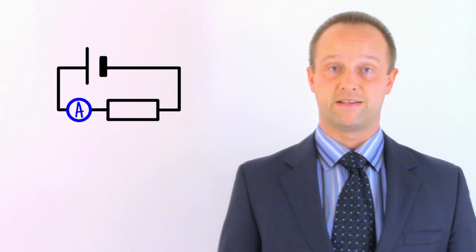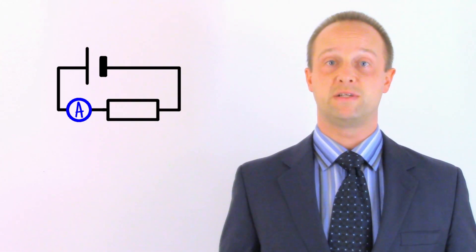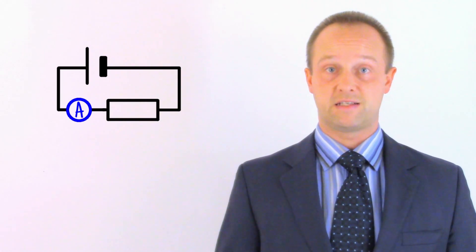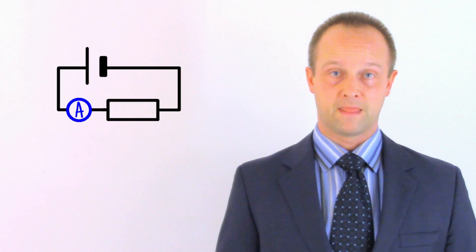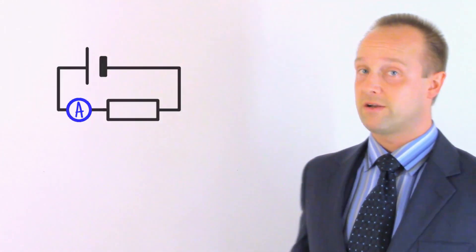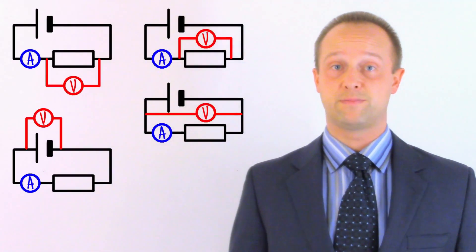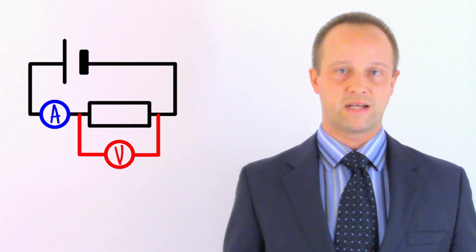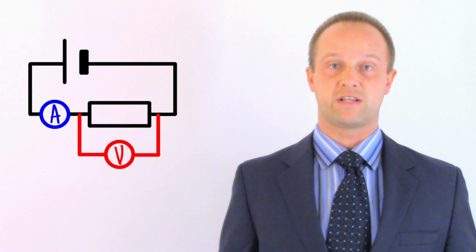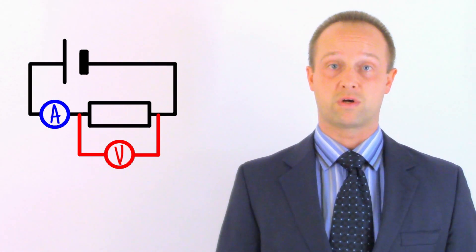We also need to add a voltmeter to measure the potential difference. Remember, the voltmeter compares the amount of potential energy between two points, so it needs to be connected in parallel from one side of the component to the other. In a simple circuit like this, we could connect the voltmeter in any of these places. But again, placing its connections right before and right after the component reduces the chances of getting things wrong in a more complex circuit.